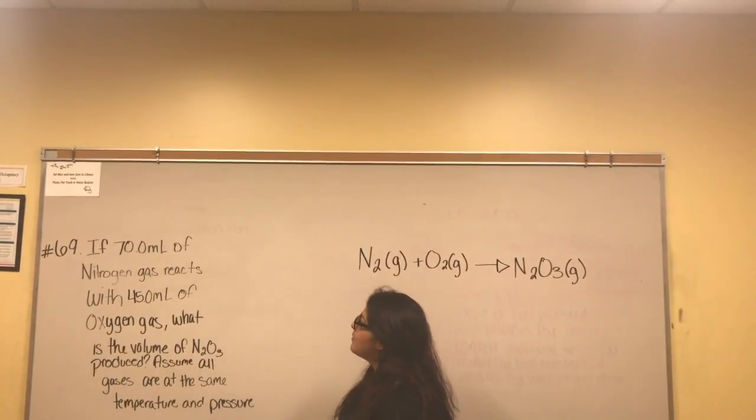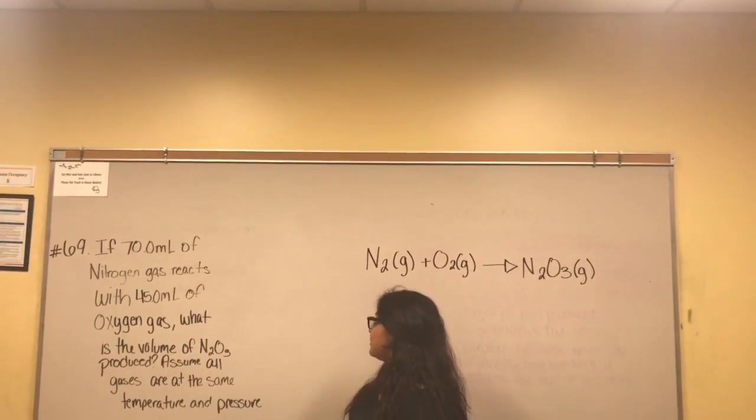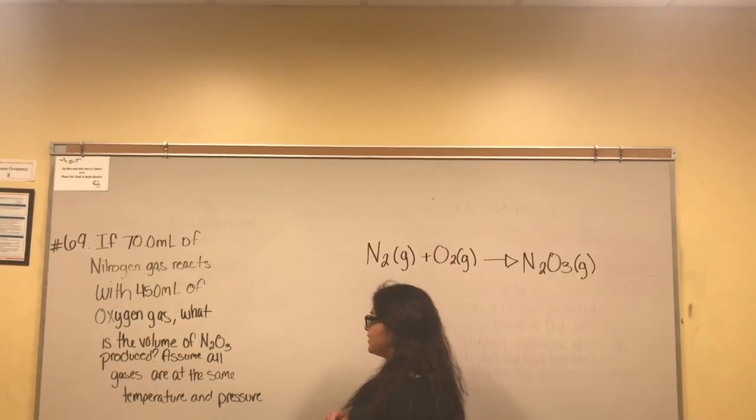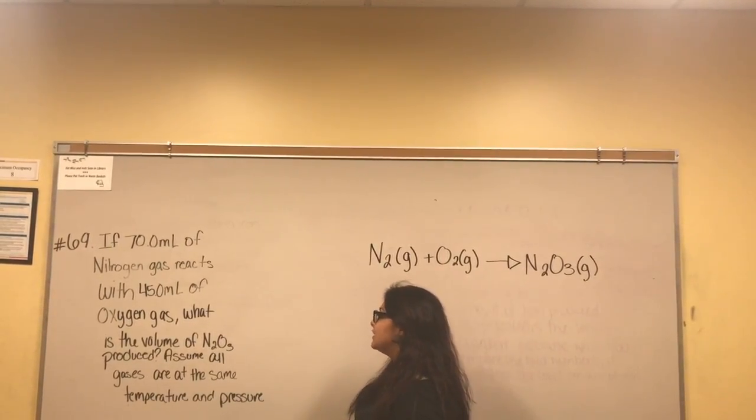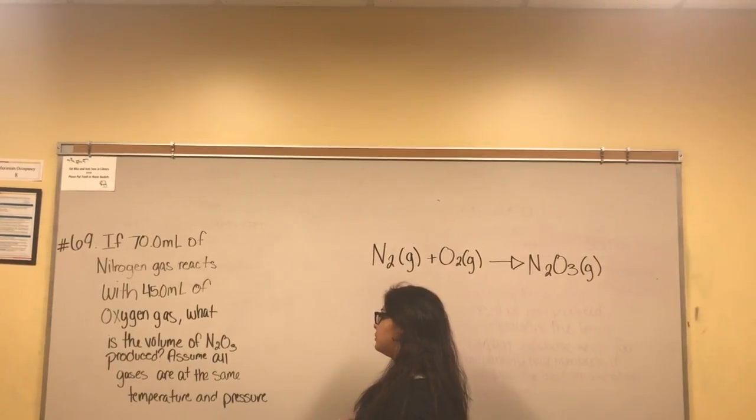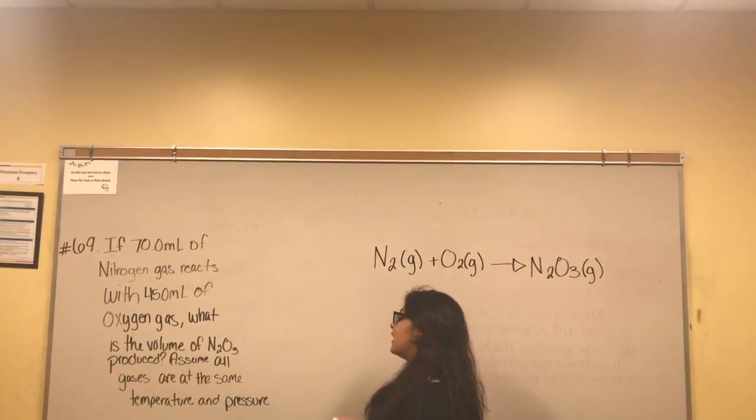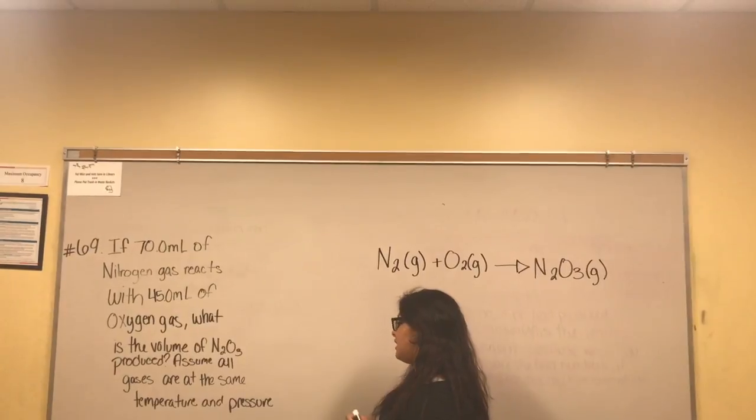My problem is number 69. If 70 milliliters of nitrogen gas react with 45 milliliters of oxygen gas, what is the volume of N2O3 produced, assuming that all gases are at the same temperature and pressure?